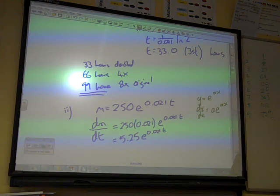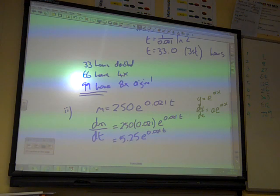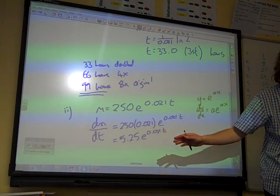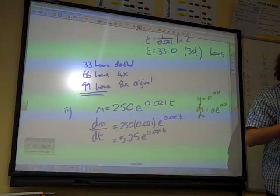And the question wants us to find out the rate at which the mass is increasing at the instant when the mass is 400 grams. Well, we're missing a little bit of information here, aren't we? What do we need to know before we can evaluate that? The time. So we need to know the time when it's 400 grams.